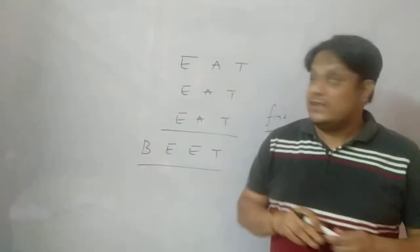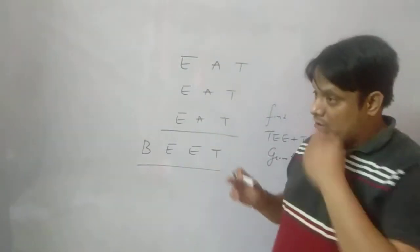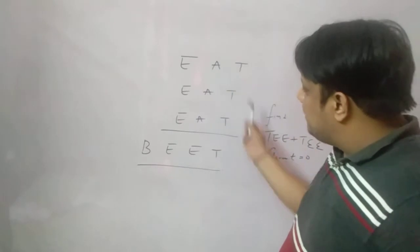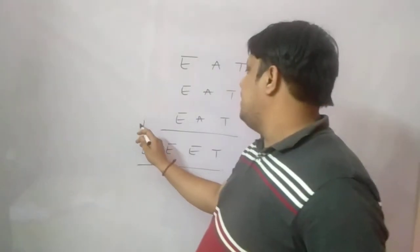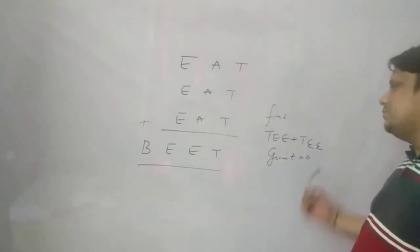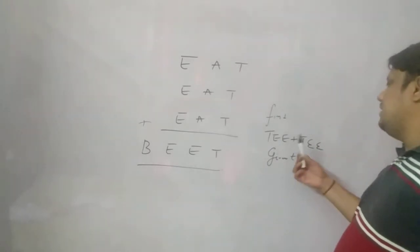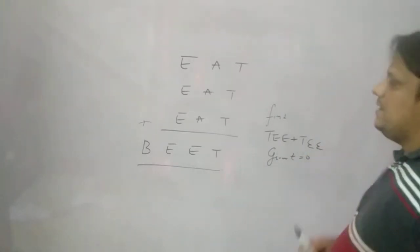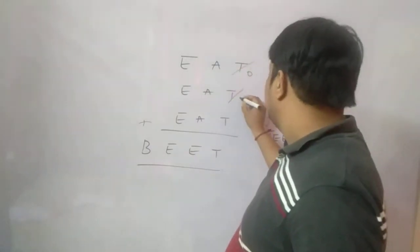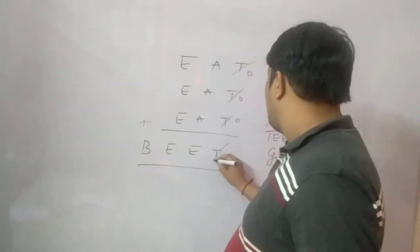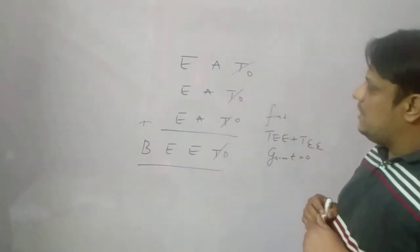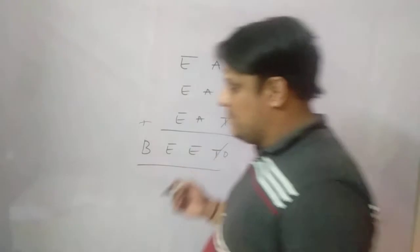Good morning guys. In this session we're going to solve this problem: EAT + EAT + EAT = BEAT. It is also given that T is equal to zero. We have to find out the value of EAT and BEAT. The value T equals zero is directly given. Now we have to find out the values of E, A, and B. It's a three-digit number.